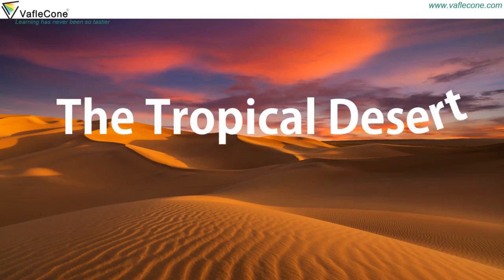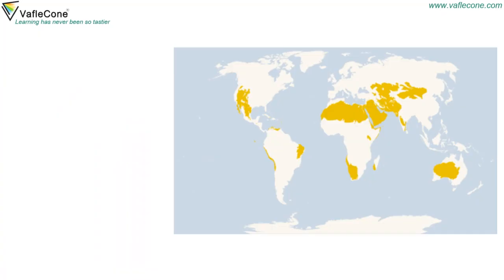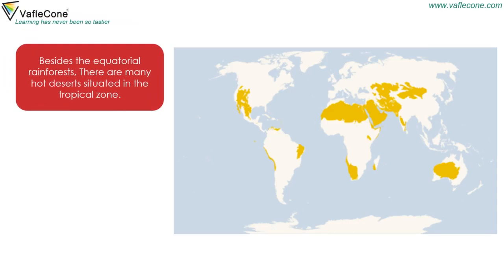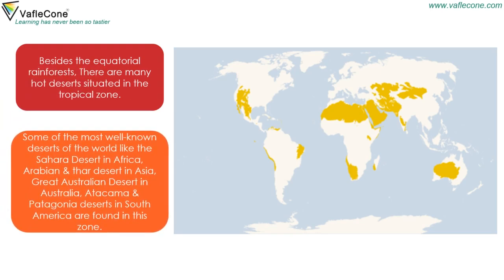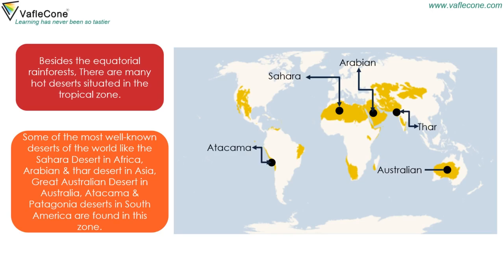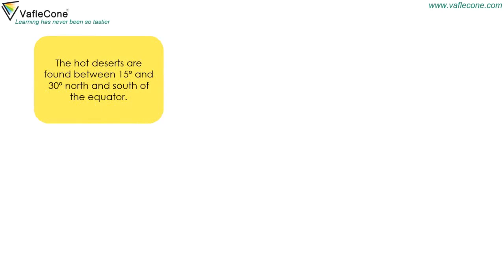The Tropical Deserts: Besides the equatorial rainforests, there are many hot deserts situated in the tropical zone. Some of the most well-known deserts of the world include the Sahara Desert in Africa, Arabian and Thar Desert in Asia, Great Australian Desert in Australia, and Atacama and Patagonia Deserts in South America. The hot deserts are found between 15 degree and 30 degree north and south of the equator.